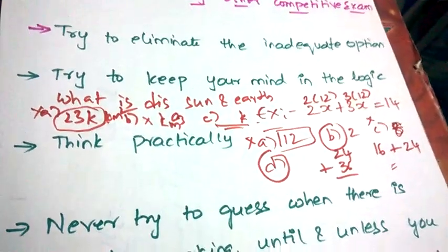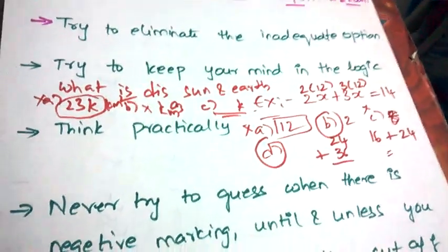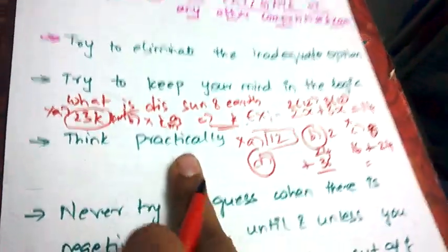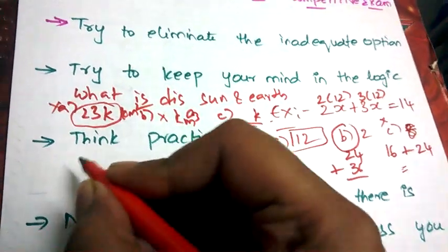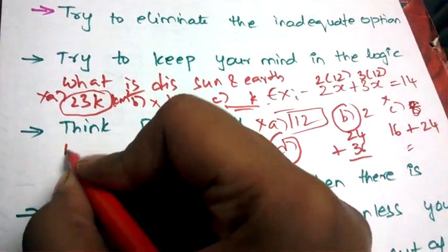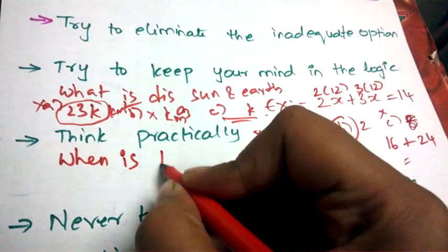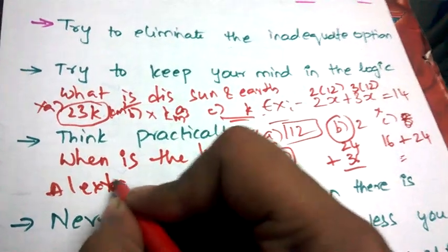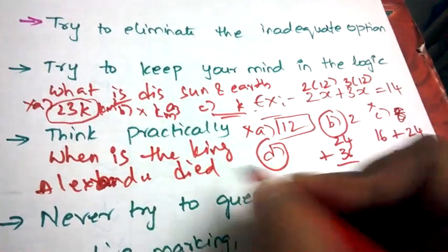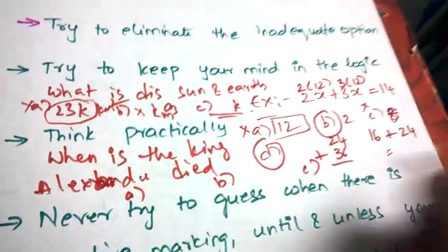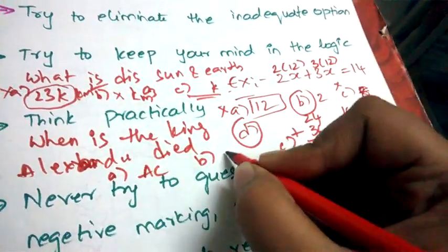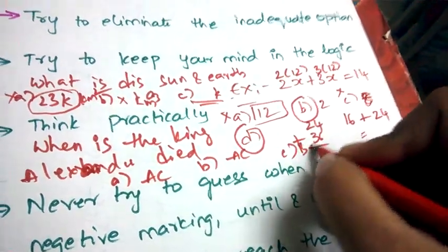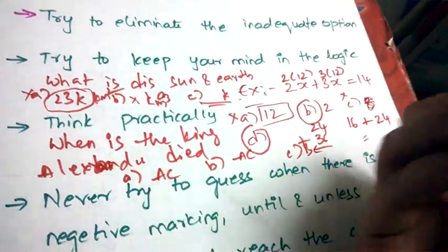Next is three: think practically. I'll explain this with an example. For example: when is King Alexander - when Alexander died? This is the question. A, B, C - some options - some option, some option, after Christ, before Christ, some options.